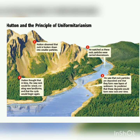In this figure, Hutton's observation of the cyclic nature of Earth's history is shown. That is, first rock is broken down into small pieces, carried downstream, and later deposited. These deposits would form a rock over time. In time, new rock would be raised, creating new landforms, and the cycle continues.